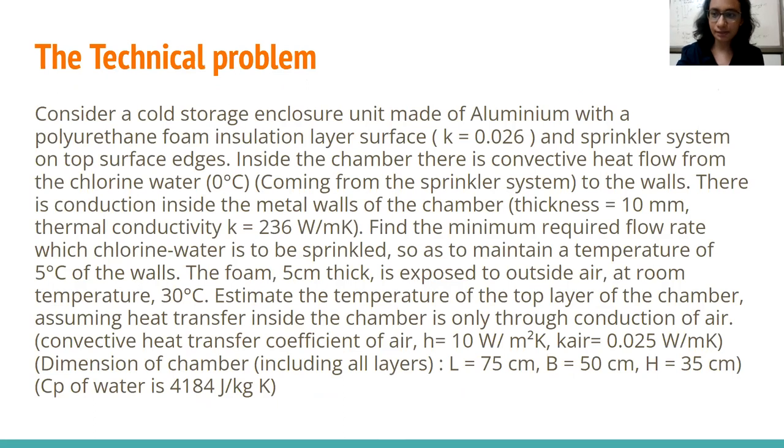Then we have the technical textbook problem. Consider a cold storage enclosure unit made of aluminium with polyurethane foam insulation layer with the given thermal conductivity and sprinkler system on the top surface edges. Inside the chamber there is convective heat flow from the chlorine water. There is conduction inside the metal walls of the chamber with the given dimensions and units. Find the minimum required flow rate of chlorine water which is to be sprinkled so as to maintain a temperature of five degrees Celsius of the walls. Estimate the temperature of the top layer of the chamber assuming heat transfer inside the chamber is only through conduction of air. These are the variables that we are hoping to find.